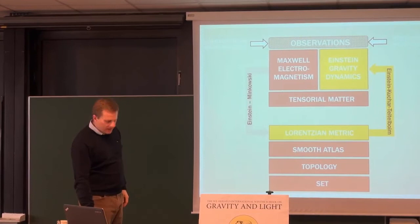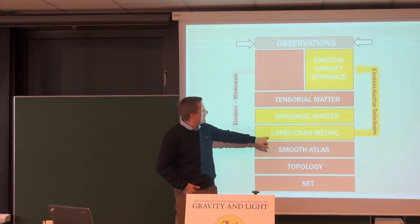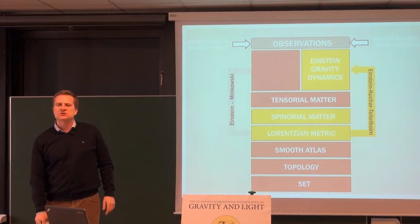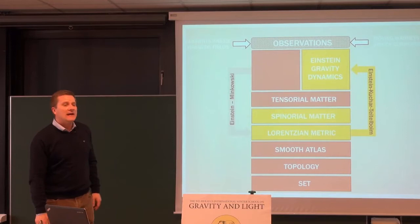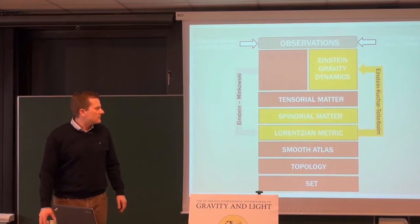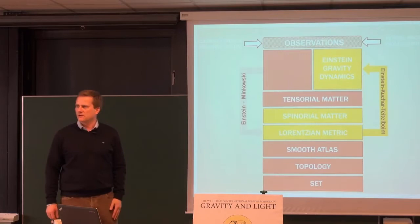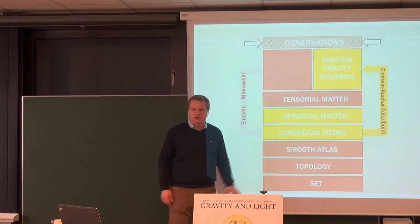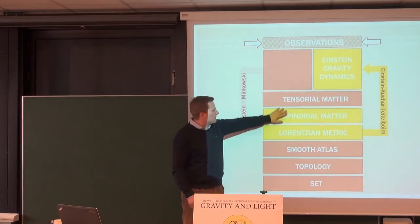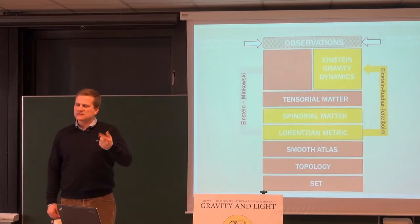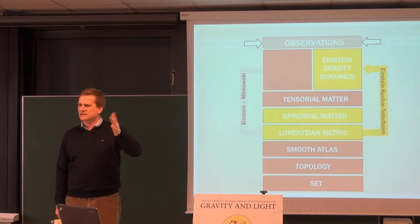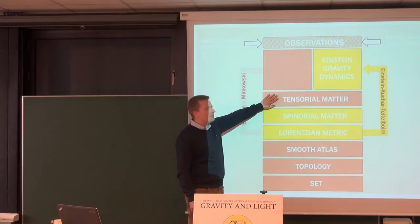There is one further ingredient to the story: spinorial matter. If you have a Lorentzian metric, only then can you start talking about spinors or fermions on space-time. In fact, the famous spin one-half is not a quantum mechanical thing — it's a concept that comes out of the representation theory of the isometry group of a flat Lorentzian metric, the so-called Poincaré group. It's a geometric thing. Once you have a Lorentzian metric, you can, under certain circumstances, impose spinors on a manifold. So the spinors come after the Lorentzian metric.